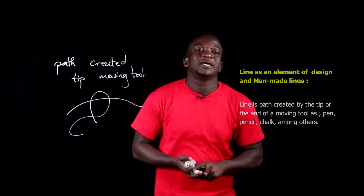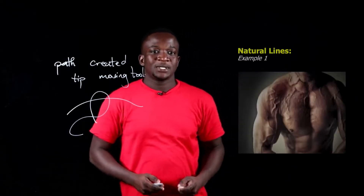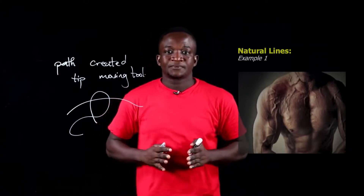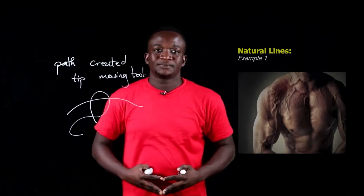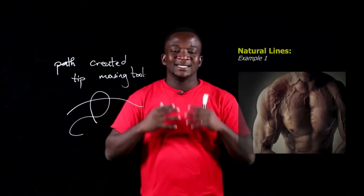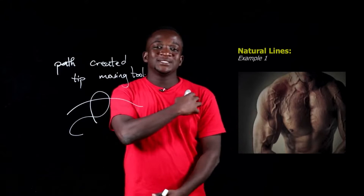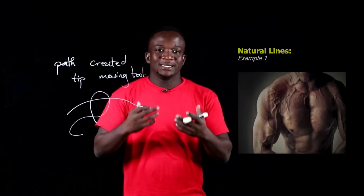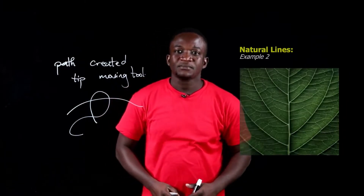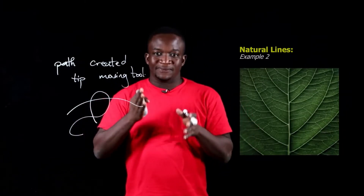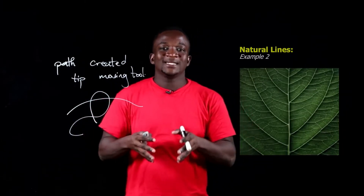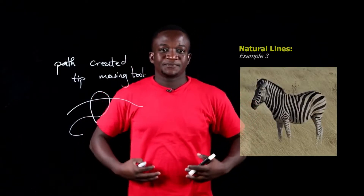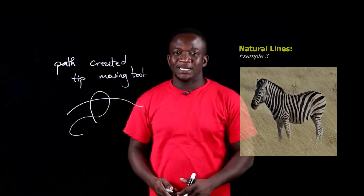There are many forms of line. This illustration shows line in nature. The veins of a human being is a line in nature. The veins of a leaf is a line in nature. The stripes of a zebra is a line in nature.